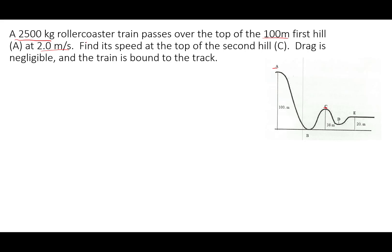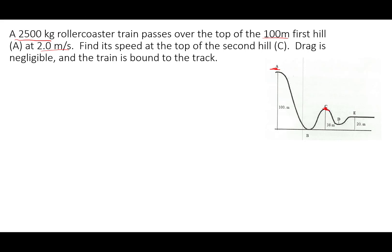In this problem, we have a 2,500 kilogram roller coaster train passing over the top of a 100-meter first hill at point A at 2.0 meters per second. Find its speed at the top of the second hill, C. Drag is negligible, friction is negligible, and the train is bound to the track. Since friction is negligible, this is a conservative system. Looking at a free body diagram, gravity pulls down and the only other force is the normal force — but the normal force never does work because it's always perpendicular to the motion. Gravity is the only force doing work, so this is a conservative system and energy is conserved.